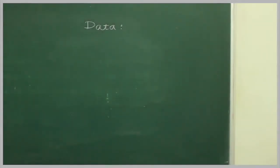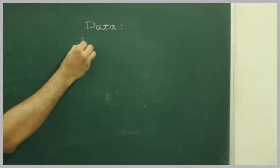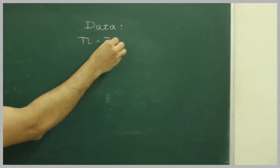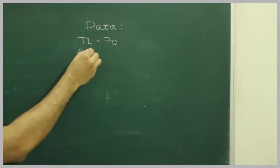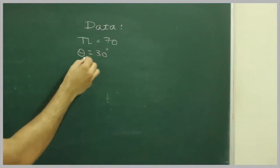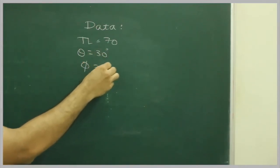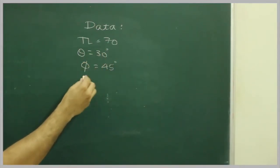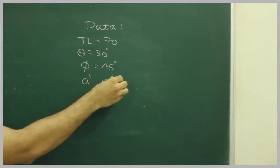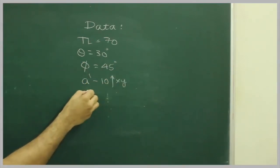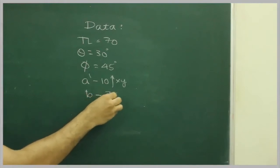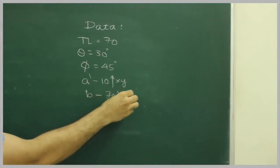So now we will write the given data: true length TL = 70, theta = 30 degrees, phi = 45 degrees, a dash = 10 mm above XY line, and b = 70 mm below XY.